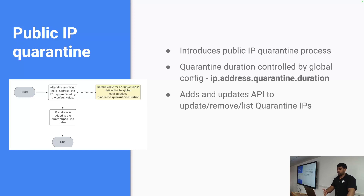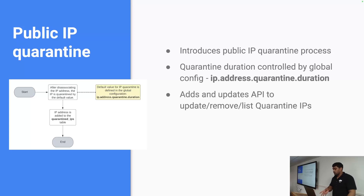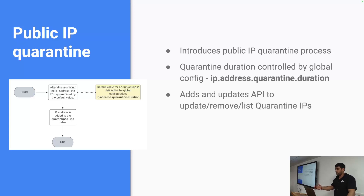Next is public IP quarantine. CloudStack allows users to acquire public IPs for different use cases, but when a network is destroyed and an IP is released, it could cause service breakages if another user acquires it immediately. This new feature of quarantining the public IP allows a time buffer before that IP becomes available to other users. This is a nice new feature added by the community in the 4.19 release.